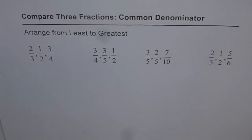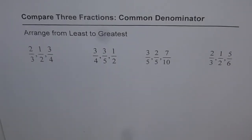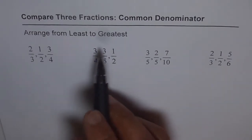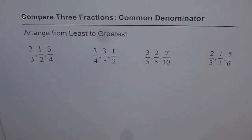Let us now compare three fractions. To compare three fractions, it is always better to have a common denominator. The question here is to arrange them from least to greatest. Least means lowest and greatest means highest.